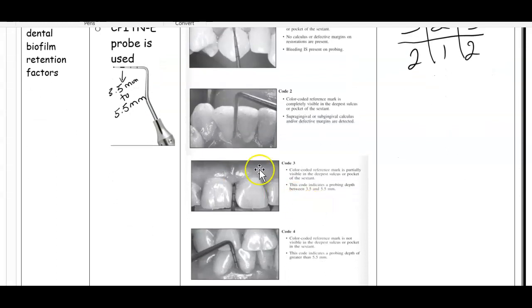Code two - again, black band is visible. We still see the black band in code two, but now you can detect calculus or you can also see defective margins, overhangs. This is code two. Because you can feel calculus, they likely would be bleeding, but the moment you detect calculus, it becomes code two. In code zero and code one, there's no calculus detected. Code two, there's calculus detected.